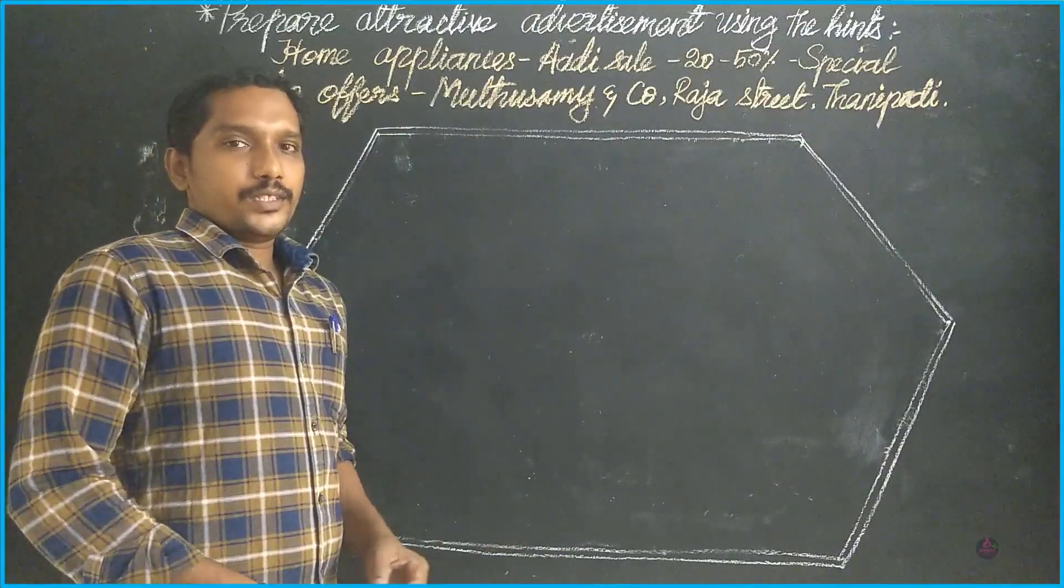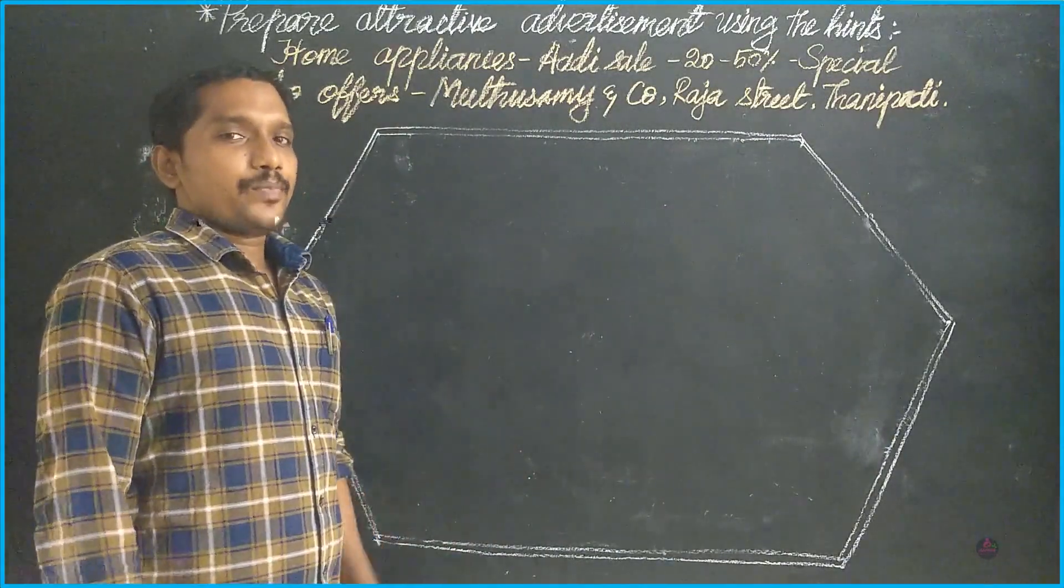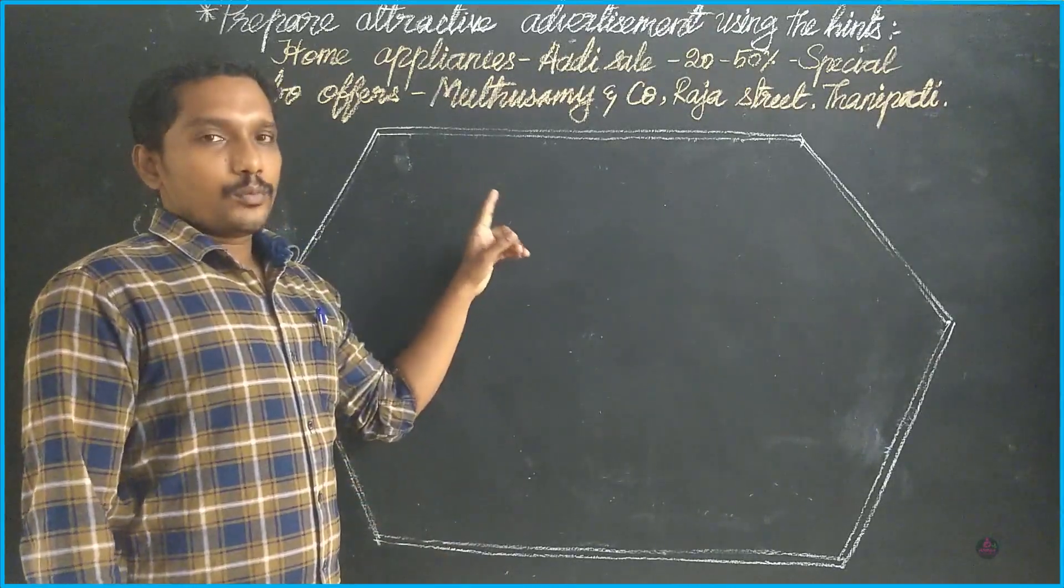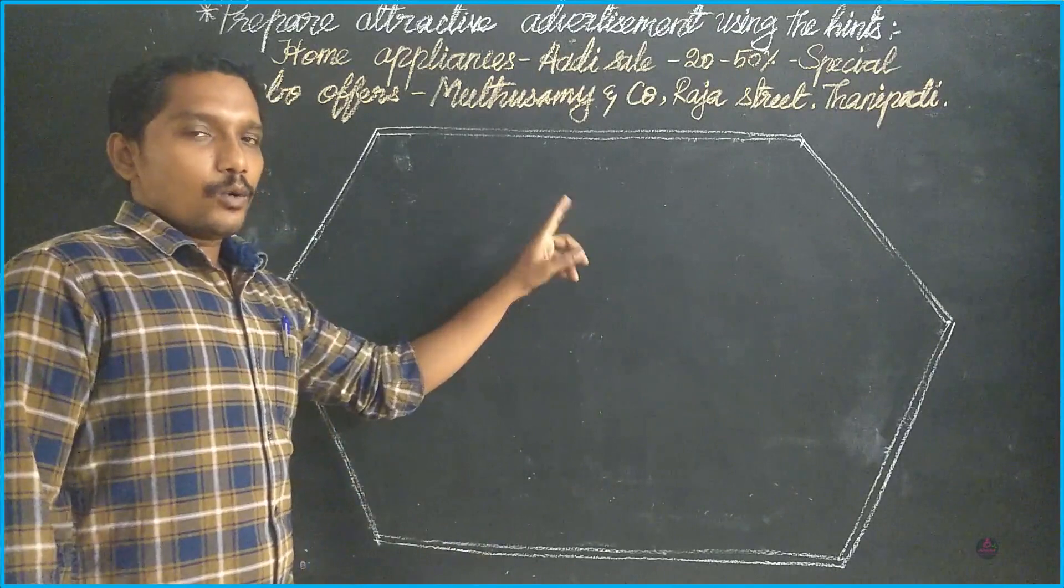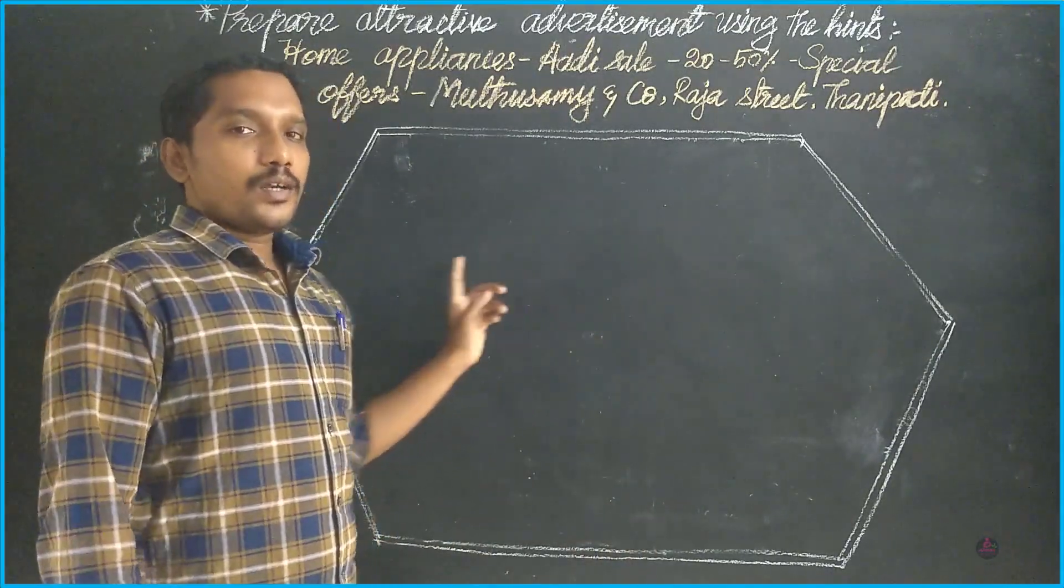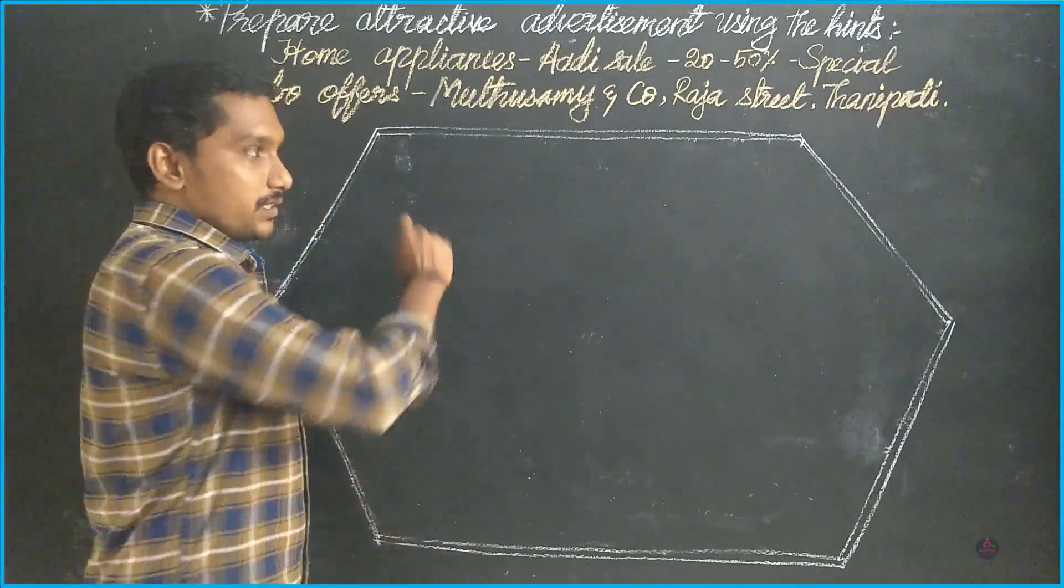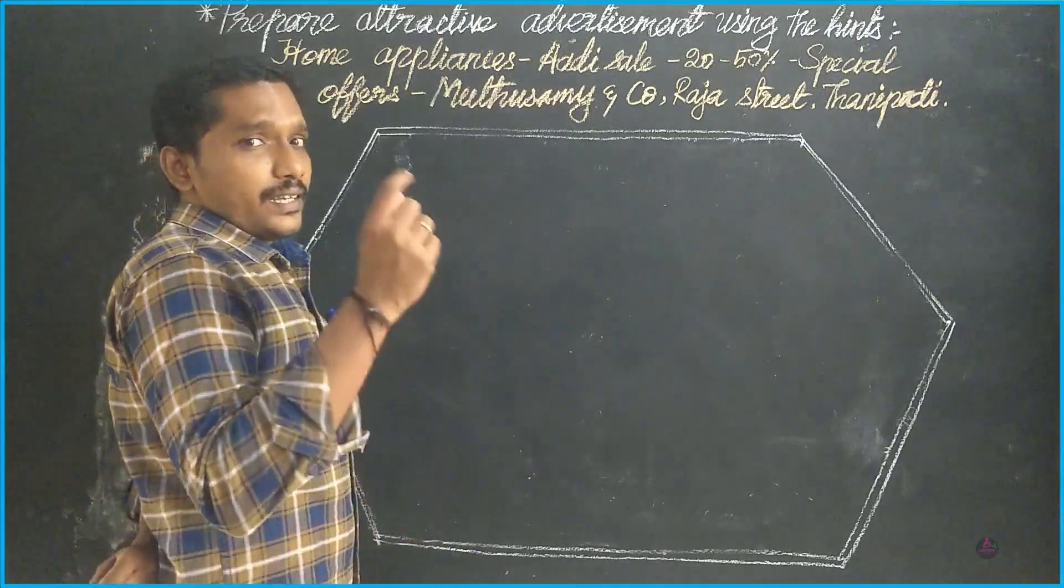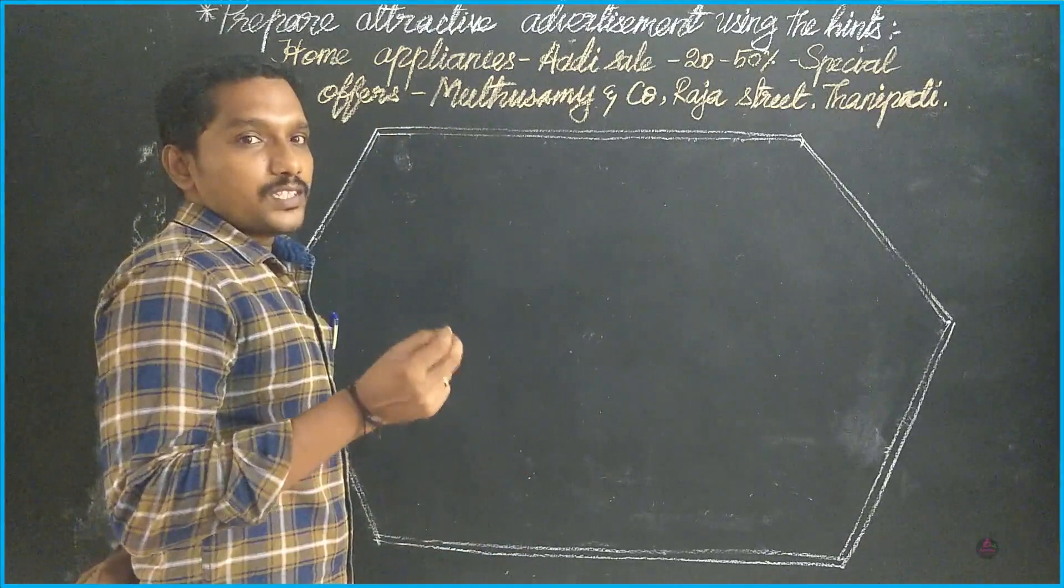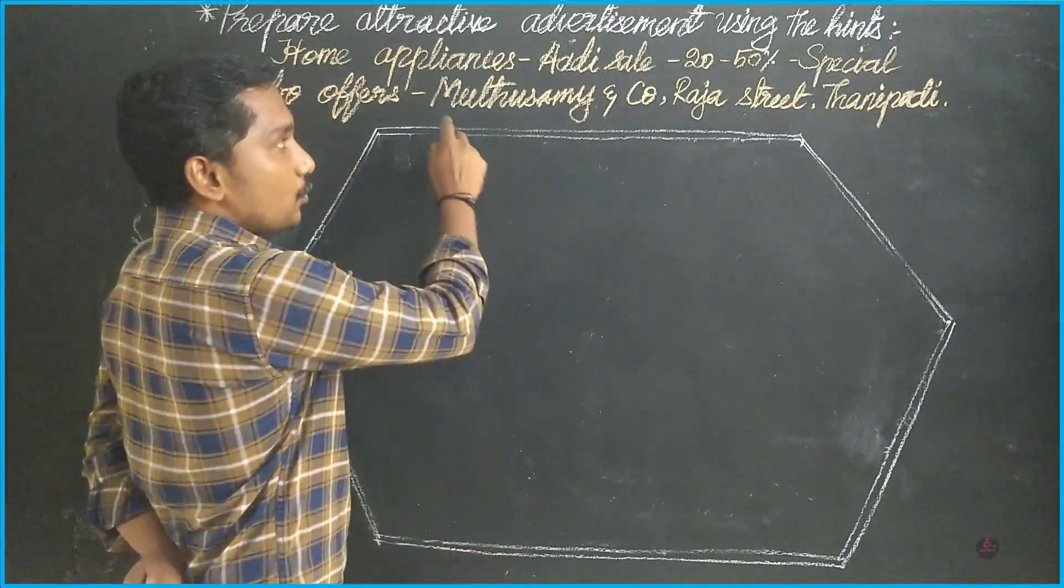This is actually a 5 mark question, so you can get full marks easily by following these steps. Draw a neat outline - you can get one mark for outline, one mark for the heading, one mark for the address, one mark for the picture, one mark for the slogan. Just follow my steps and draw an outline like this. Everything's in the question, so you need not worry about the spelling. Just pick it out from the question and write here.